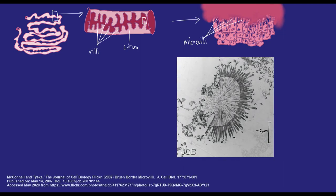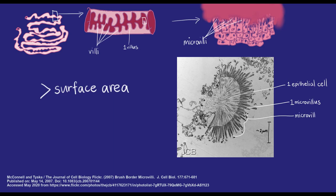Microvilli are more of these finger-like shapes that provide lots of surface area. They increase the opportunities for transport across the cell membrane. Collectively, the microvilli of many cells on the villi is called the brush border.